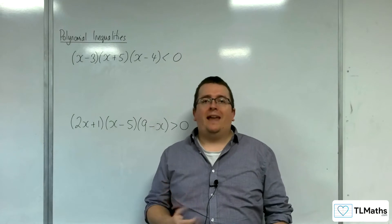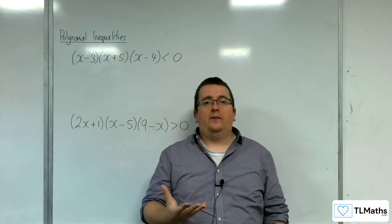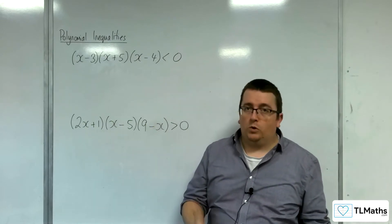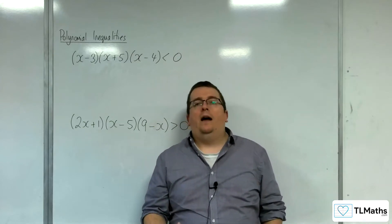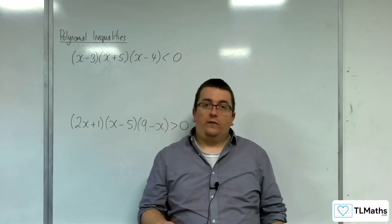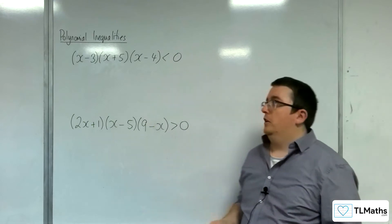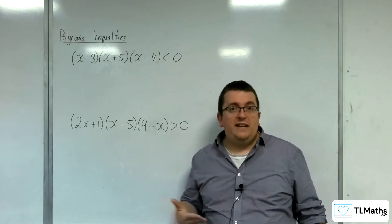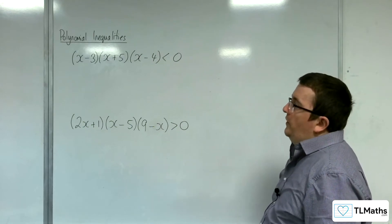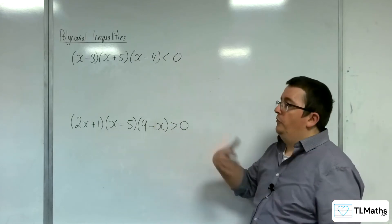In this section we're going to be looking at polynomial inequalities, dealing with inequalities for cubics and quartics. Assuming you have done quadratic inequalities for A-level maths, and you might have touched upon cubic inequalities already. This section is really just about making sure you can do that, and then in the next section we go on to rational functions.